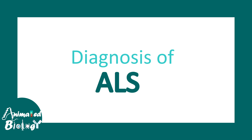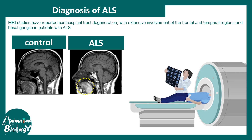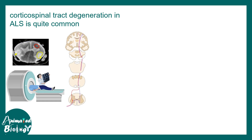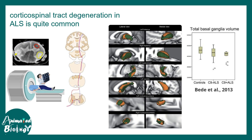Diagnosis of ALS can be done using MRI. One key signature seen in ALS is a bright tongue on MRI scan. There can also be degeneration in the corticospinal tract, which is prominent on MRI reports. Additionally, the basal ganglia — which coordinates movement and motor coordination — is also affected; studies have found that basal ganglia volume is overall reduced in ALS patients.